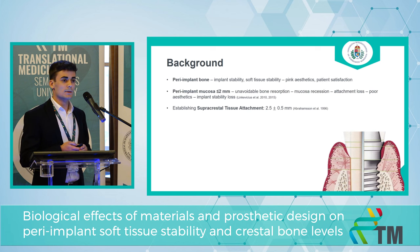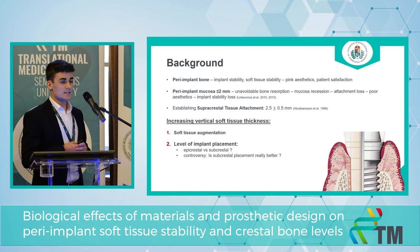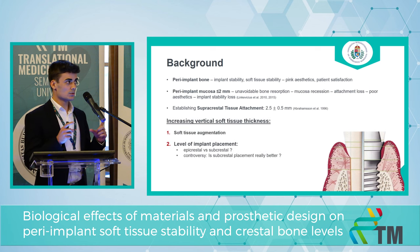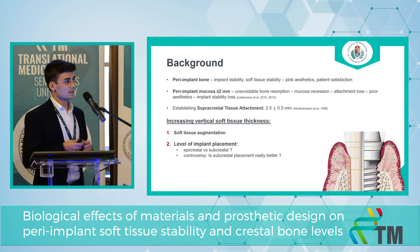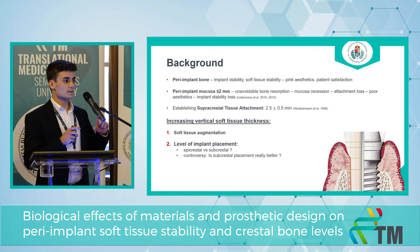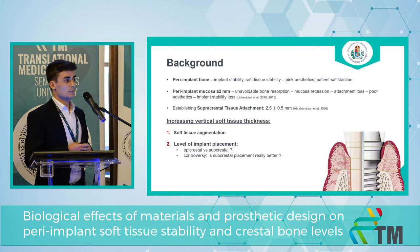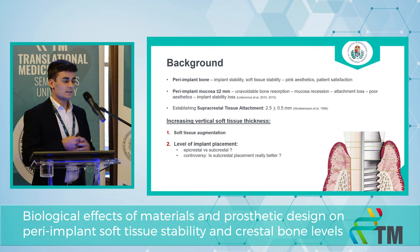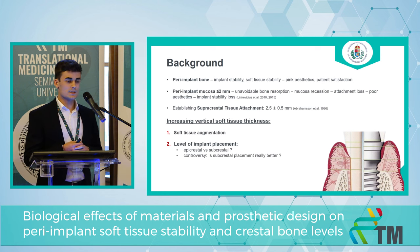The question is: how could we minimize this bone resorption? By increasing mucosa tissue thickness. One method is soft tissue augmentation, but in this study we are focusing on the level of implant placement. Placing the implant subcrestally means we will have more vertical space for the tissue. However, there is some controversy among studies.